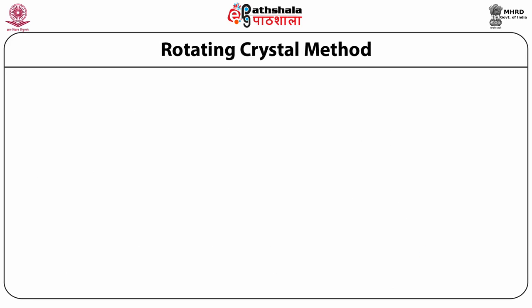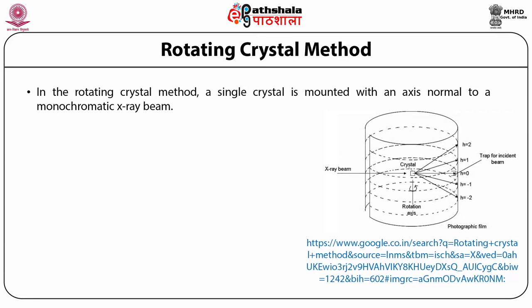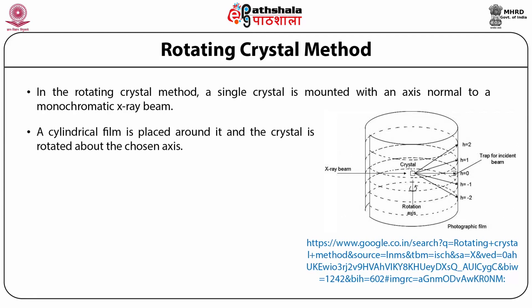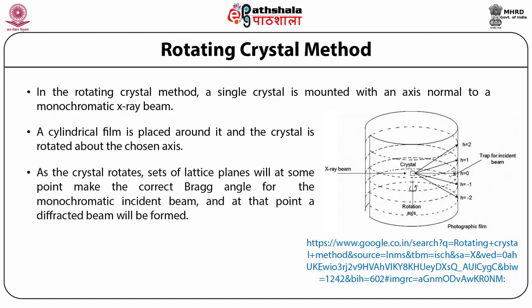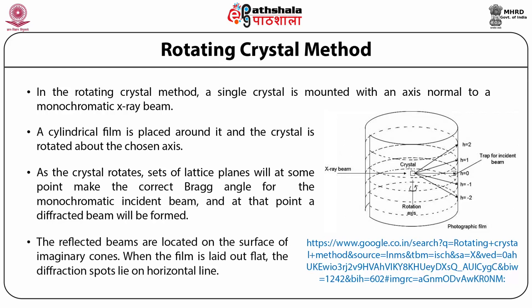The rotating crystal method: a single crystal is mounted with an axis normal to a monochromatic X-ray beam, and a cylindrical film is placed around it while the crystal is rotated about the chosen axis. As the crystal rotates, sets of lattice planes will at some point make the correct Bragg angle for the monochromatic incident beam, at which point a diffracted beam is formed. The reflected beams are located at the surface of imaginary cones; when the film is laid out flat, the diffraction spots lie on horizontal lines.